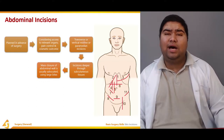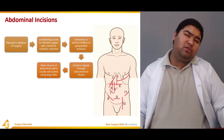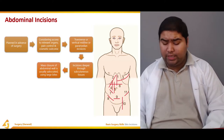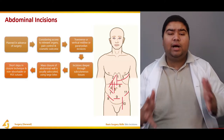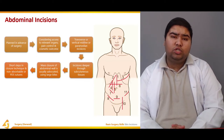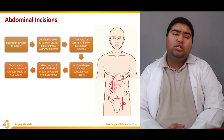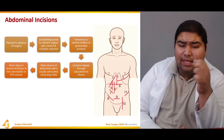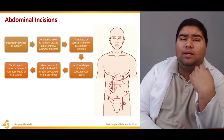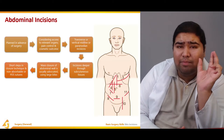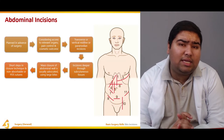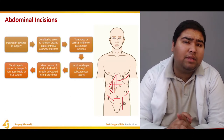Mass closure of the abdominal wall is usually advocated, and this is done by taking large bites. After you've completed your surgical procedure, it is advised that you mass close the abdominal wall with large bites. Short steps in closure technique and non-absorbable sutures should be used. PDS sutures are particularly recommended — they are very strong and help the abdominal wall to close and heal.